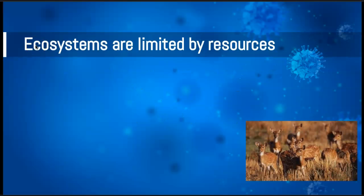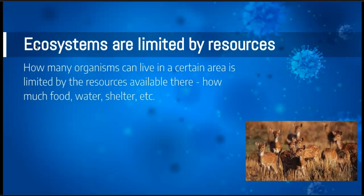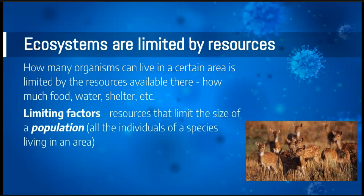Ecosystems are limited by the resources that are available. How many organisms can live in a certain area are going to be limited by the things that they need — things like food, water, shelter, etc. Those limiting factors are resources that limit the size of a population. All of the individuals in a species that are living in an area are called the population, and the resources that will limit how big that population gets are what are called limiting factors.